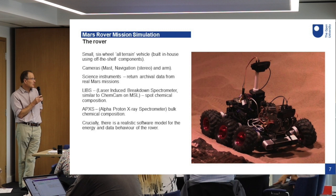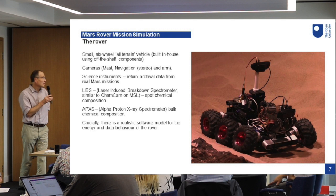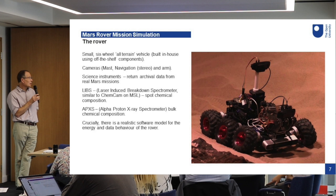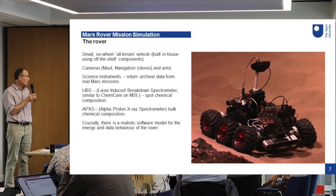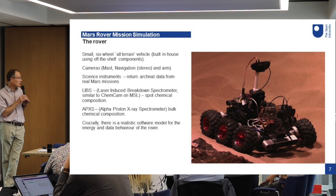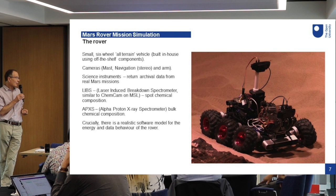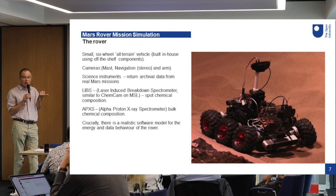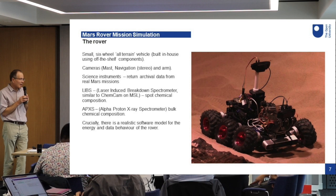We also have simulated science instruments. When the rover is investigating a rock in the yard, the rock is an Earth rock, but we use archival data obtained from MSL to link that rock to a real Martian rock. We have two science instruments the students are running: one called LIBS, a laser spectrometer similar to ChemCam on MSL, which does spot chemical composition on quite small areas of rock; and the APXS — the alpha-proton X-ray spectrometer — which gives a bulk chemical composition of a rock. What's crucial is that there's a realistic software model behind the rover, so the energy budget and data budget of the rover are all built into a model that the students interact with.